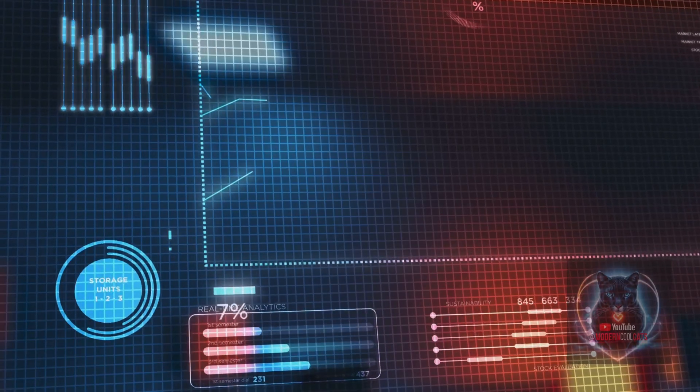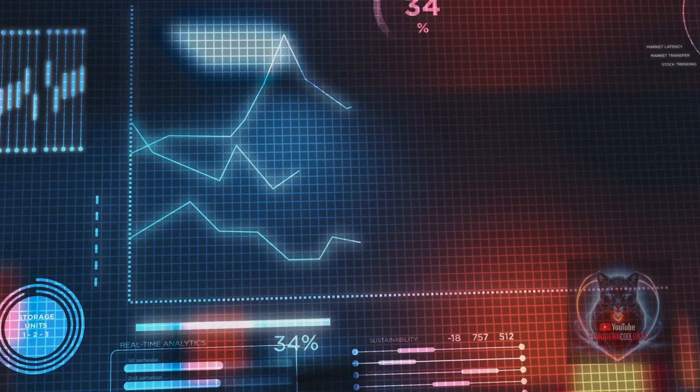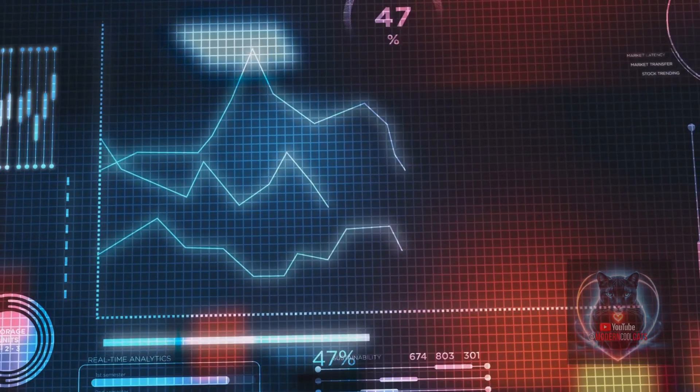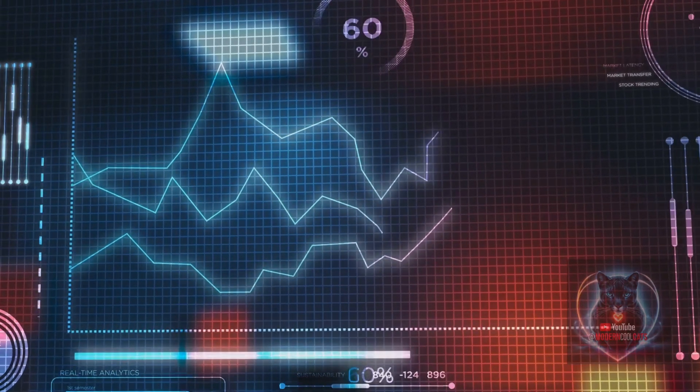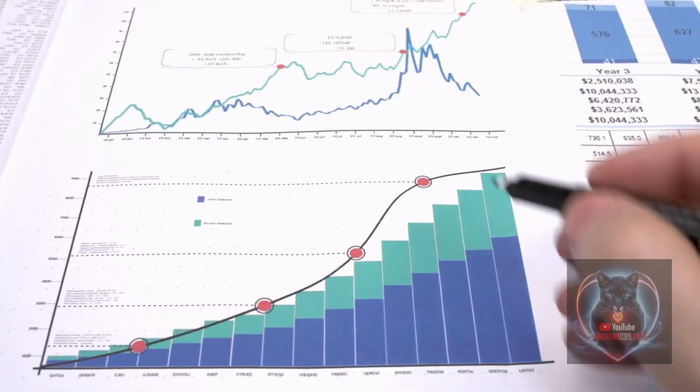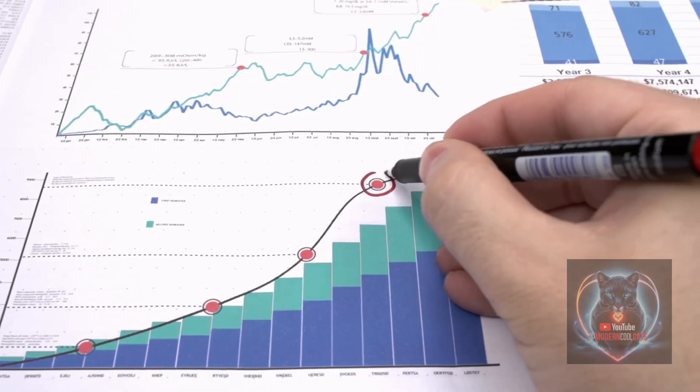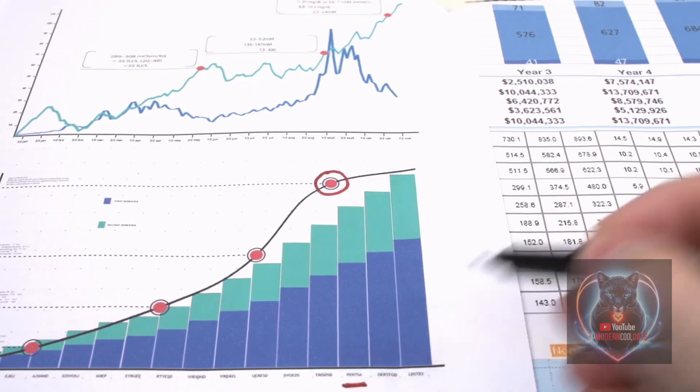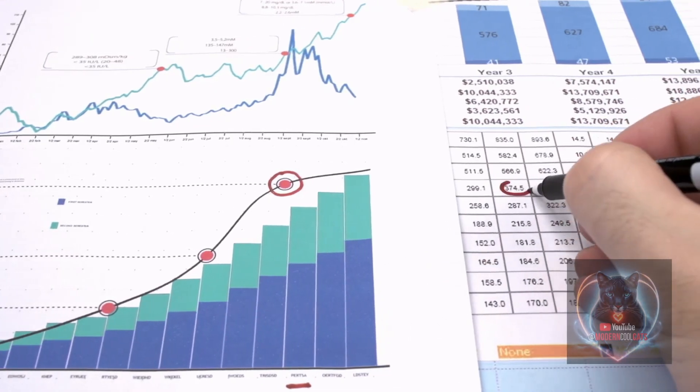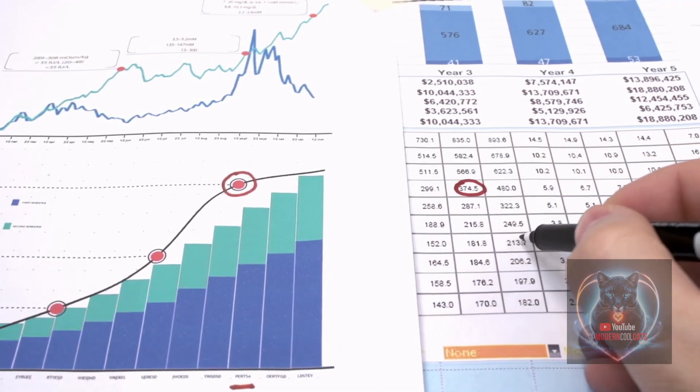By examining the FRY9C, regulators and analysts can identify potential vulnerabilities within the banking system and take proactive measures to safeguard the financial system. This data collection allows for the evaluation of a BHC's financial stability and resilience, particularly during economic downturns or periods of financial stress.